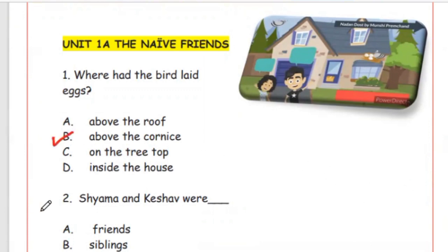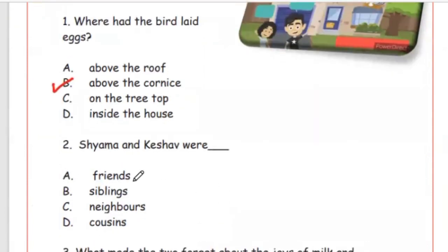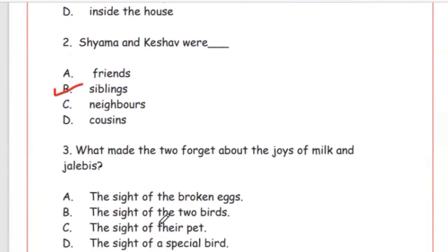Question 2: Shama and Keshav were — friends, siblings, neighbors, or cousins? The right answer is siblings. Siblings means brothers and sisters.